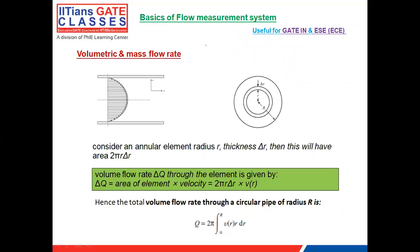Continuing into the third lecture, we will study volumetric and mass flow rate. If you take a particular cross-sectional area and observe how much fluid flows in a given unit of time, that gives the flow rate. In a pipe, taking radius r from the center, the fluid velocity is maximum at the center and nearly zero near the boundary.